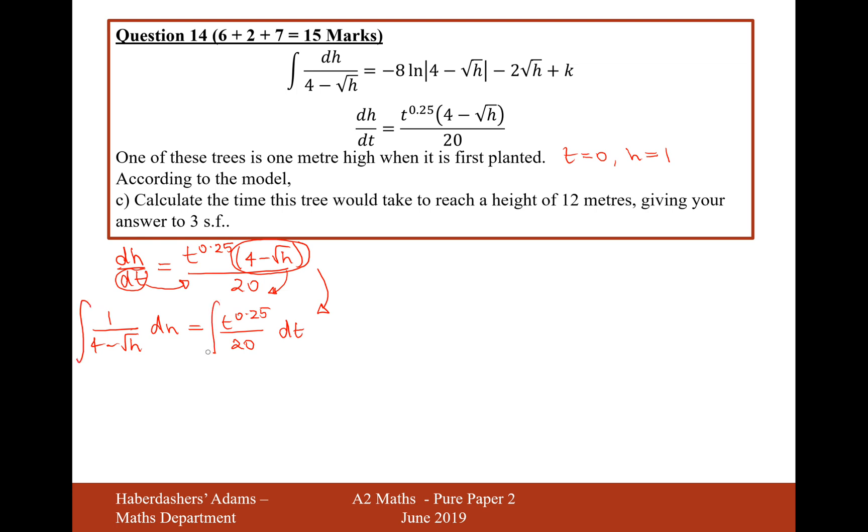The next thing I'm now going to do is I'm now going to integrate both sides. Now we know what the integral on the left-hand side is going to be. It's going to be minus 8 ln 4 minus root h minus 2 root h plus k. We'll put the k on the left-hand side in this expression here. When you integrate a thing like this, you only have to put the constant on one side. Now with this integral here, we're going to increase the power by 1 and then divide by the new power. So if this is a quarter, it's now going to be 5 over 4 and then divide by that 5 over 4. So that's going to make it 4 over 100 or 1 over 25.